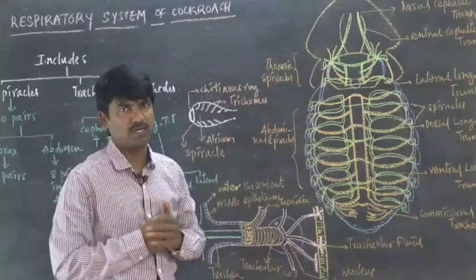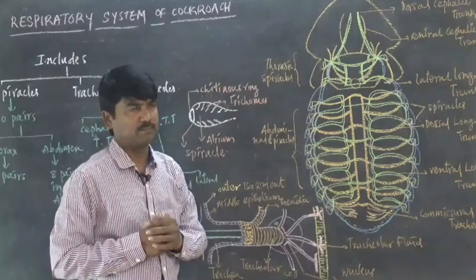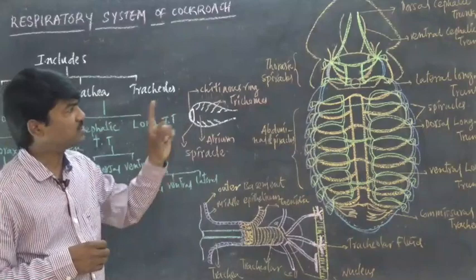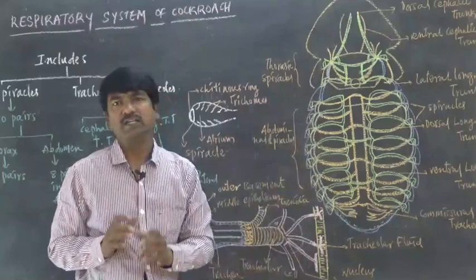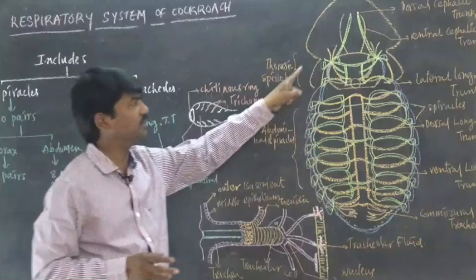The thorax is divided into three parts: pro-thorax, meso-thorax, and metathorax. However, the pro-thorax does not contain any spiracles or stigmata. The first pair of the two thoracic pairs is located in the meso-thorax region, and the second pair is located in the metathorax region. These two pairs are also known as thoracic spiracles.